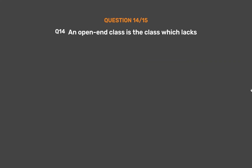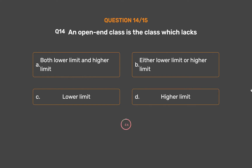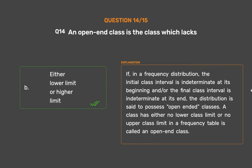Question number 14. An open-end class is the class which lacks: Option A: Both lower limit and higher limit. Option B: Either lower limit or higher limit. Option C: Lower limit. Option D: Higher limit. The correct answer is Option B: Either lower limit or higher limit. If in a frequency distribution the initial class interval is indeterminate at its beginning and/or the final class interval is indeterminate at its end, the distribution is said to possess open-ended classes. A class that has either no lower class limit or no upper class limit in a frequency table is called an open-end class.